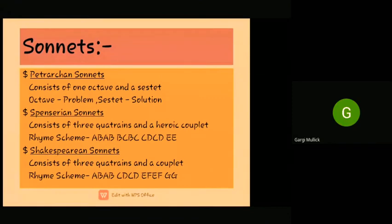Now we come to the Spenserian sonnets. These consist of three quatrains and one final couplet, which is known as the heroic couplet. The rhyme scheme of Spenser is ABAB BCBC CDCD EE.